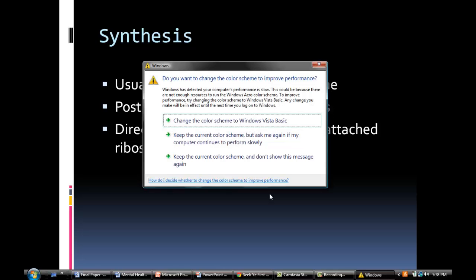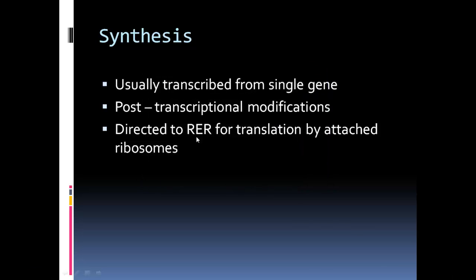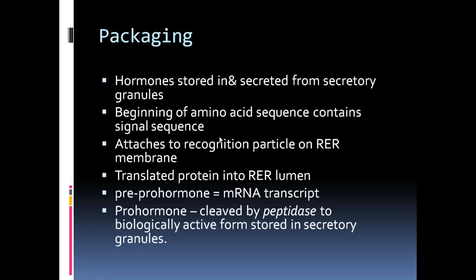Now, the synthesis of a hormone. The synthesis of a hormone is usually transcribed from a single gene, with post-transcriptional modifications, and directed to the rough endoplasmic reticulum for translation by attached ribosomes. Hormones are stored and secreted from secretory granules. During the beginning of the amino acid sequence, it contains signal sequences. Translated proteins enter the rough endoplasmic reticulum lumen. Pre-hormones are also known as mRNA transcripts, and the pro-hormone is cleaved by peptidase to biologically active forms stored in secretory granules.